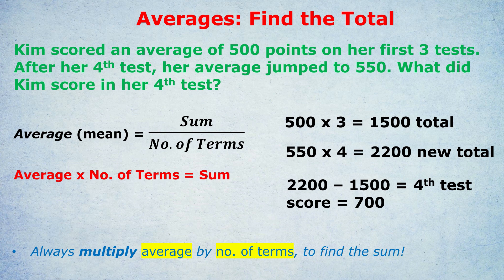The 700 on her fourth test brought her average up from 500 to 550. And the way we got that was always by multiplying the average by the number of terms to find the sum. I think it's not only the easiest way to answer these average questions, it's also the quickest. So let's get on to a second example, which is from an official question.